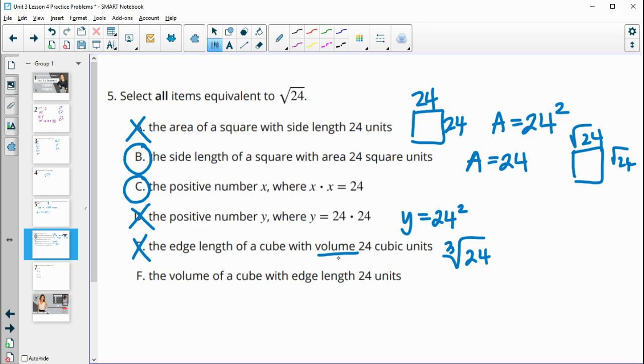And then the volume with an edge of 24. No, because you'd be multiplying 24 together three times, which would be 24 cubed.